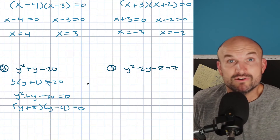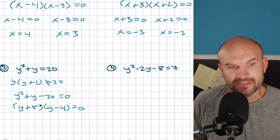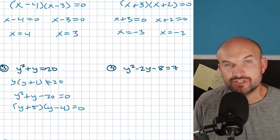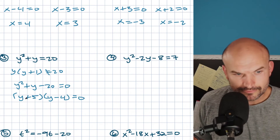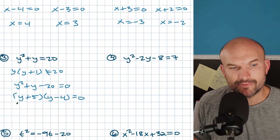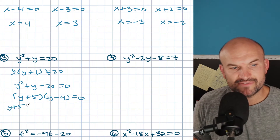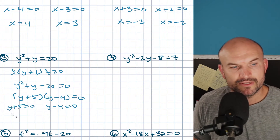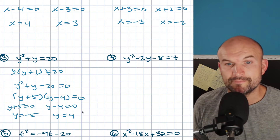You can always check your work — multiply back out to make sure you go back to your original equation. So I can rewrite this as (y plus 5)(y minus 4) equals zero and apply the zero product property: y plus 5 equals zero and y minus 4 equals zero. Therefore y equals negative 5 and y equals positive 4.